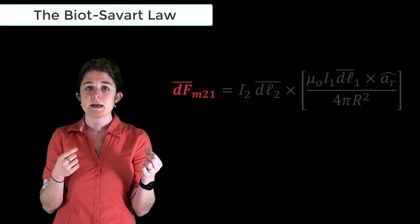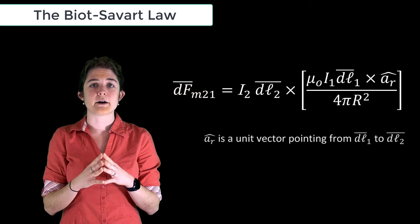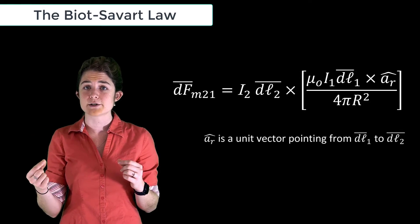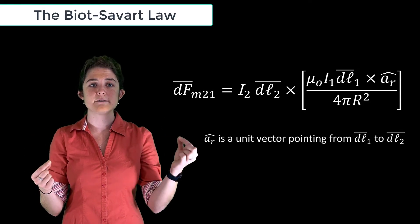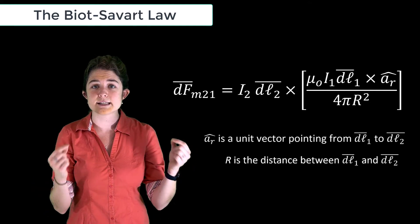In this equation, a sub R is the unit vector pointing from the field source current element of the first loop to the force receiving current element of the second loop, and capital R is the distance between those two current elements.